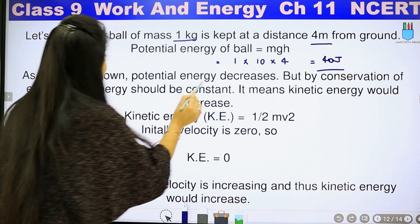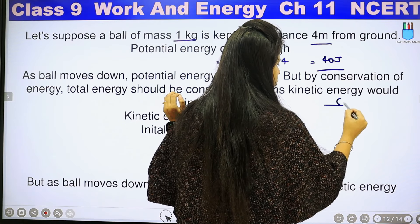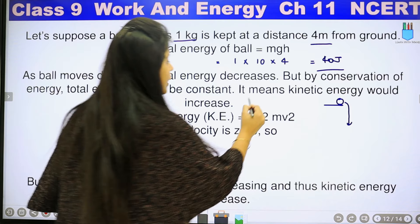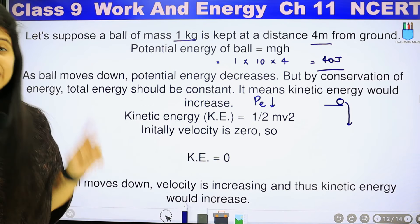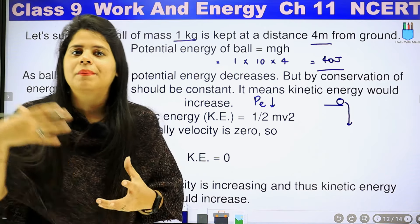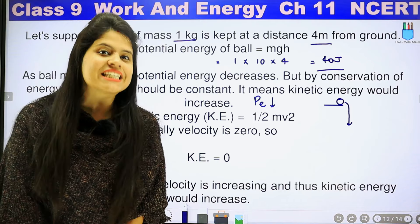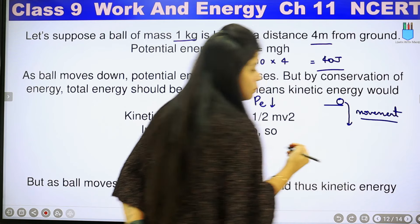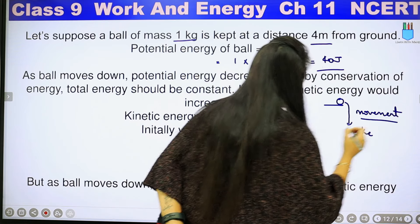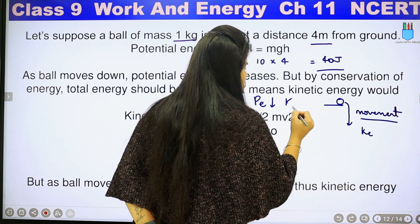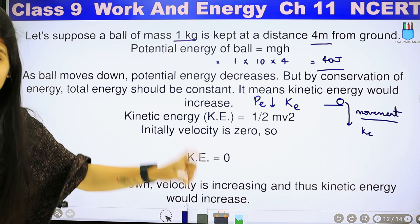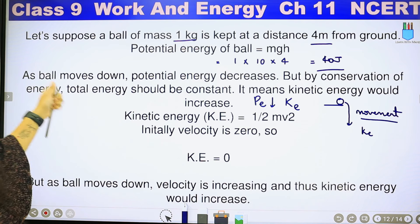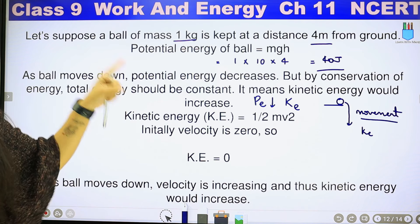As the ball moves down, the potential energy decreases. When there is movement in any object, it possesses kinetic energy. So just as the potential energy is reduced, kinetic energy adds. As the ball moves down, the potential energy decreases, but by conservation of energy, total energy should be constant — which means kinetic energy would increase.